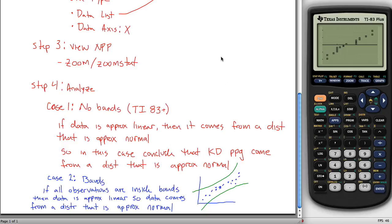I think that's everything you need to know about normal probability plots and how you create one with the TI. That's the end of this tutorial.